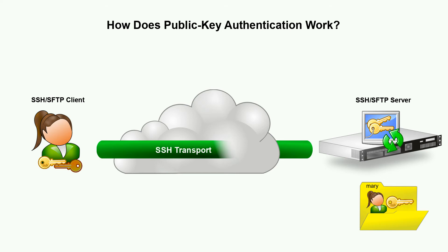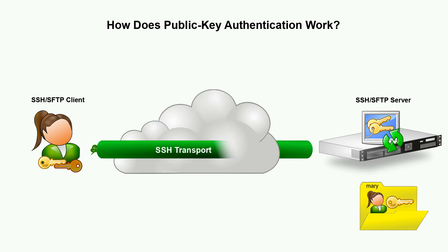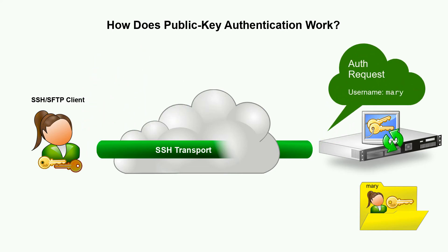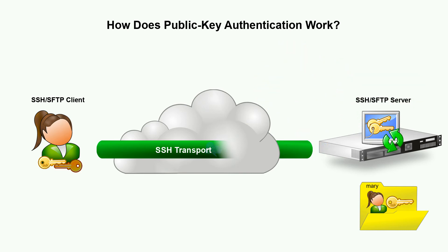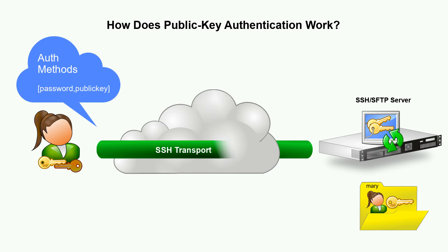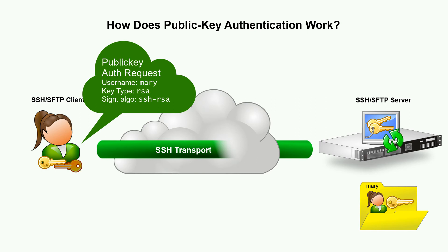Once encryption is in place, the Secure Shell client tells the server that it would like to perform authentication as a specified user account name. The server then replies with a list of possible authentication methods available for that account. If the Public Key authentication method is listed, the client sends a Public Key authentication request including the user account name, the type of key being used, the signature algorithm the client will use to prove it has the corresponding private key, and the Public Key itself.